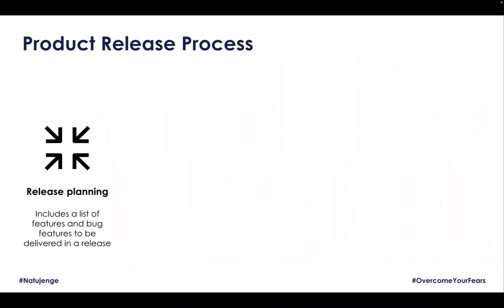Release planning is used to come up with a list of features that should be included in a release. A release plan could actually cover many releases within the year. With Agile, these conversations are changing because the Agile manifesto assumes we're not so sure about tomorrow and can't plan too far ahead. Nevertheless, we still have to do releases. Think of release planning as the stage where we develop a list of things that need to be added.